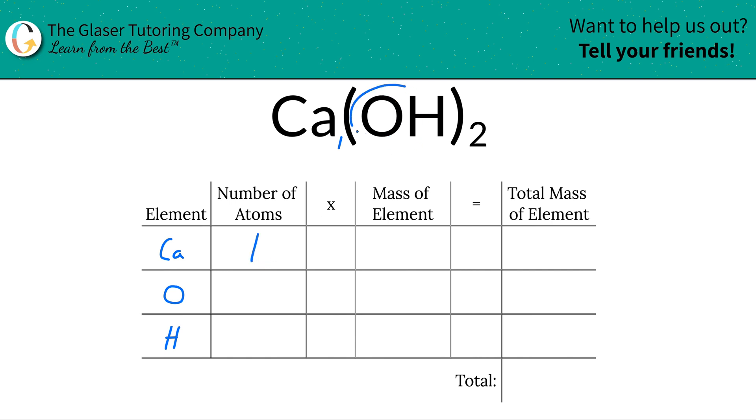Now for oxygen, oxygen is part of the polyatomic anion hydroxide. Now in each hydroxide, you have one oxygen. But wait a minute, you have two hydroxides overall, so that means you should have a total of two oxygens. In other words, you can take the subscript of oxygen and simply multiply it by the subscript there on the outside. So that would be a total of two.